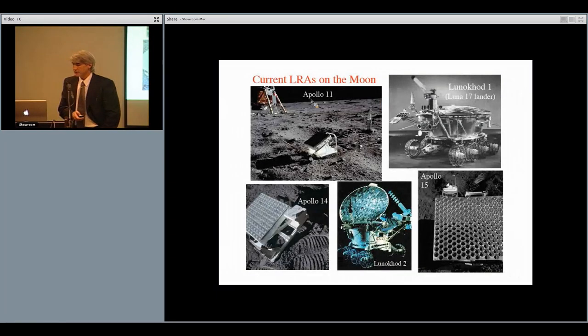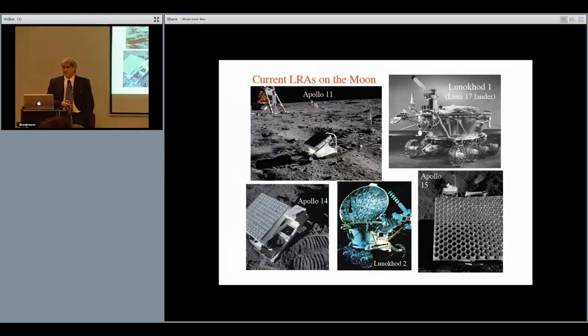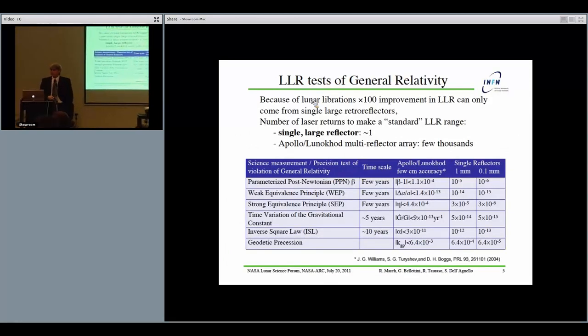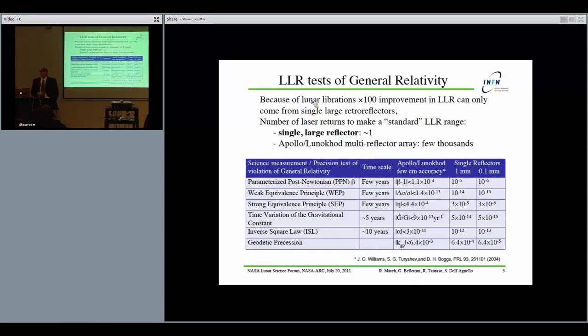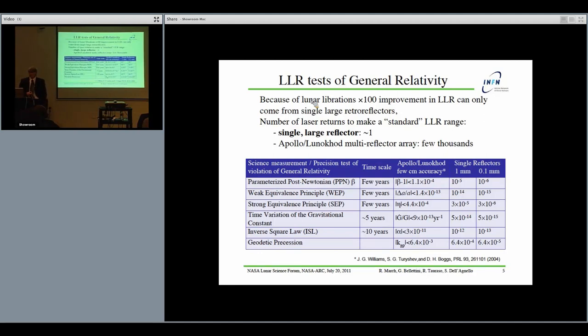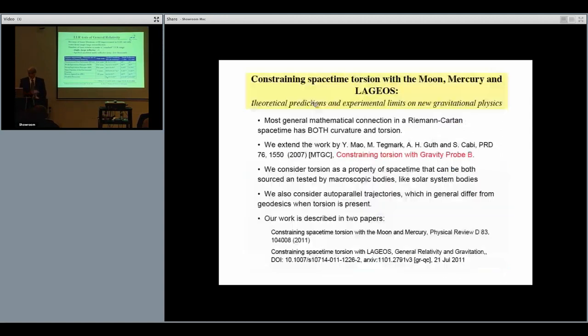On the Moon we have five nice arrays put there by the three Apollo missions and two Russian missions. At the moment, because of lunar vibrations, current measurements with these arrays cannot be improved significantly unless we replace the space segment and replace multi-reflector arrays with single large reflectors. At the moment you see here a list of measurements on gravitational parameters: parameter beta, the equivalence principle, time variation of the gravitational constant, the inverse square law, and geodetic precession of the Moon around the Earth. The accuracy is a few centimeters on the range. To improve that we need single large reflectors to replace the arrays because of the effect of vibrations.